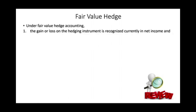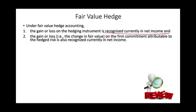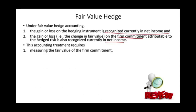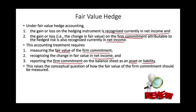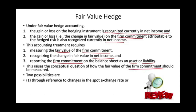The best way to illustrate this is through an example, but first let's make sure we understand how fair value hedging works. The gain or loss on the hedging instrument is recognized in net income, and the gain or loss on the firm commitment is also recognized in net income — everything goes to net income. The accounting treatment requires measuring the fair value of the firm commitment, recognizing changes in fair value in net income, and reporting the firm commitment on the balance sheet as either an asset or liability. You can use either the spot rate or the forward rate to measure fair value.